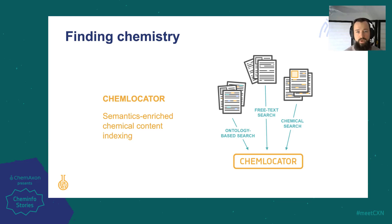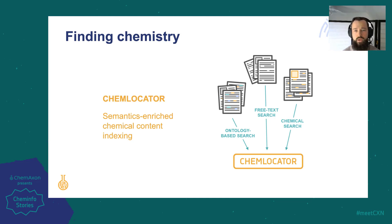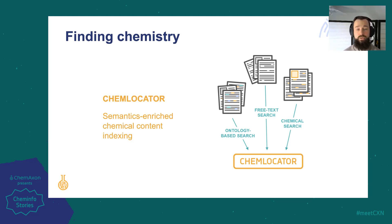ChemLocator creates a seamless, automated workflow to regularly index chemistry in your unstructured content sources, whether located in local drives or in the cloud. Structures are converted from chemical names, live objects, and images using the ChemAxon naming and chemical entity extraction tools. Simultaneously, the body of ordinary text is also processed, providing a search experience where chemical structures can be found in the context of free text and biomedical ontology terms.